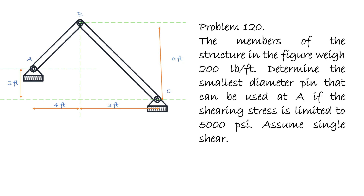Good morning everyone. Today we are going to solve a problem from the book of Ferdinand Singer, Strength of Materials, under the topic of shear stress. The members of the structure in the figure weigh 200 pounds per feet. We are to determine the smallest diameter pin that can be used at A if the shearing stress is limited to 5000 psi.